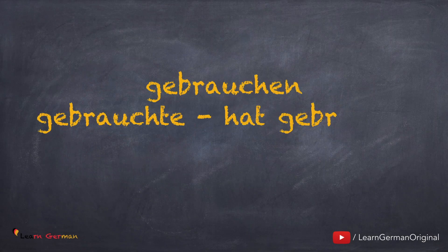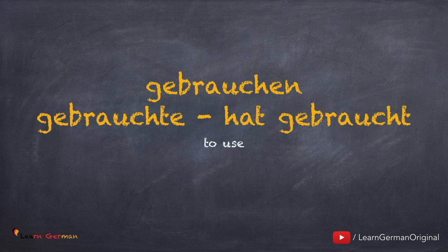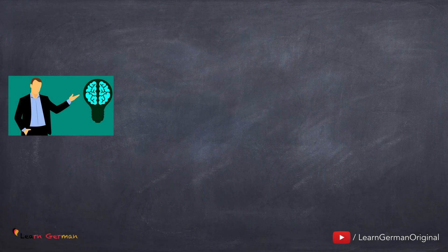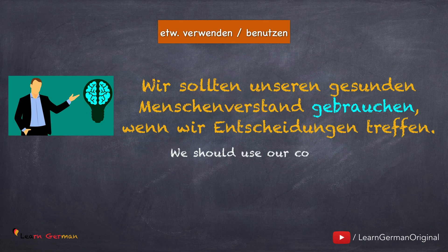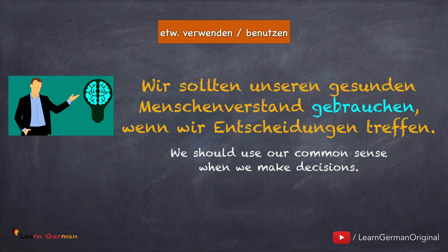Hier ist das nächste Verb: Gebrauchen, gebrauchte, hat gebraucht. Gebrauchen benutzt man auch in vielen Kontexten. Hier ist die erste Bedeutung: etwas verwenden oder benutzen. Wir sollten unseren gesunden Menschenverstand gebrauchen, wenn wir Entscheidungen treffen. Das heißt, wir sollten unseren Menschenverstand verwenden.